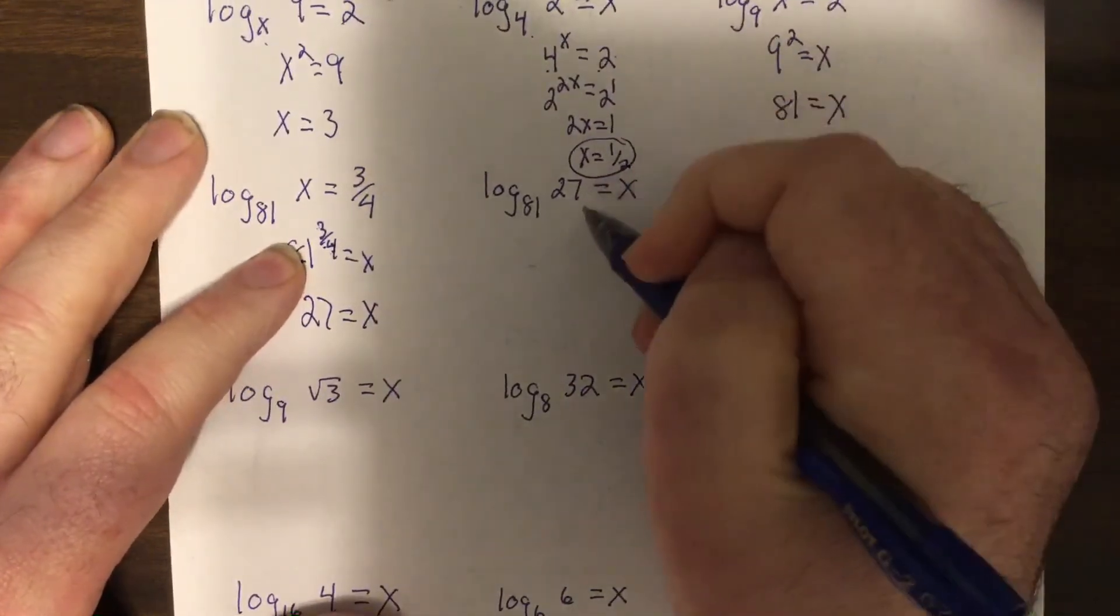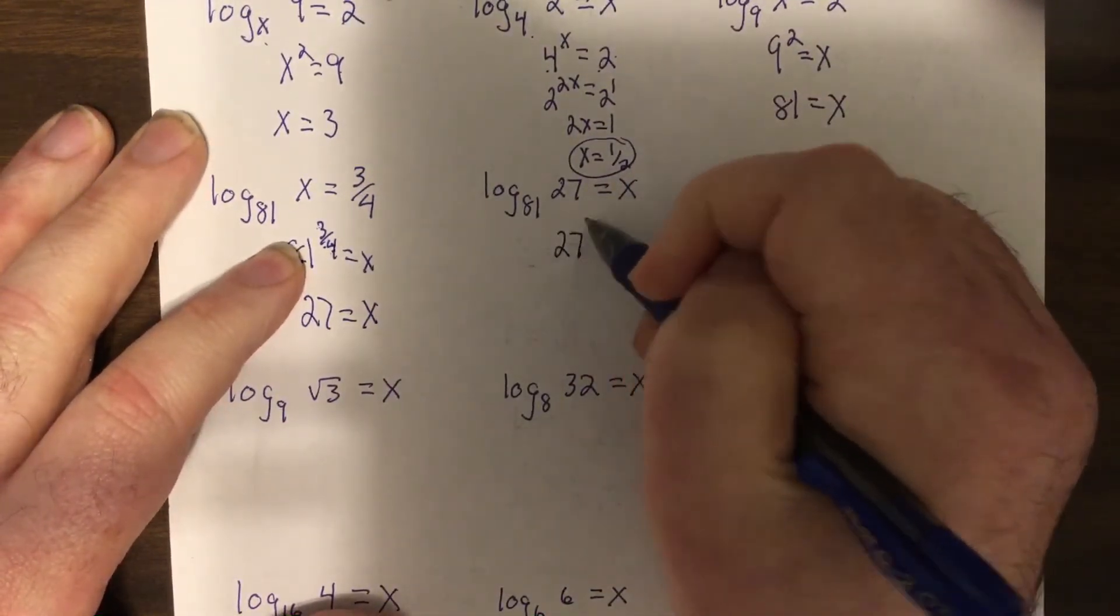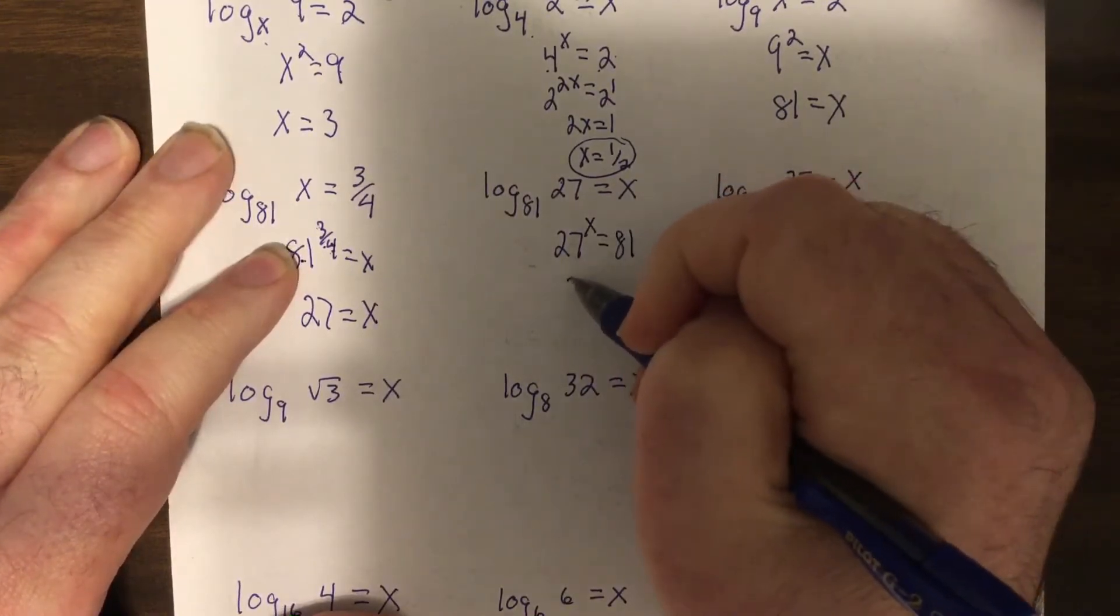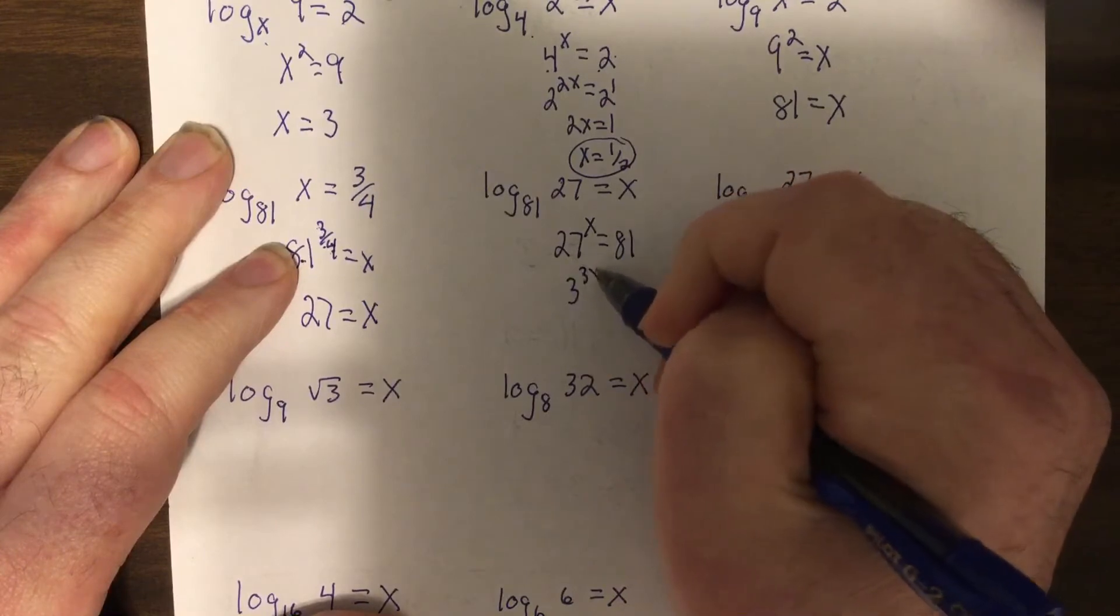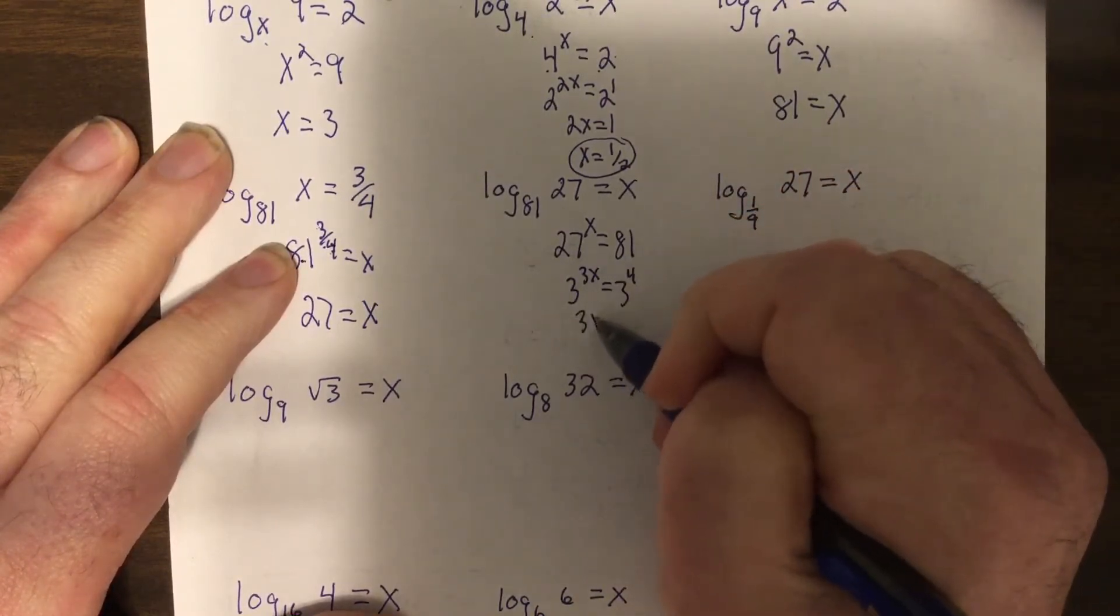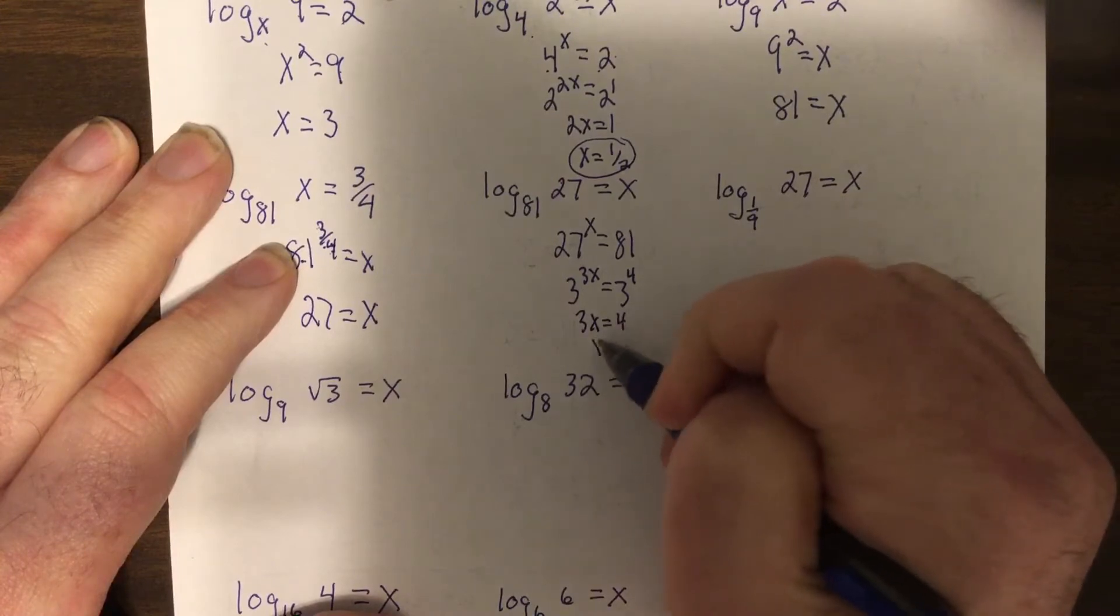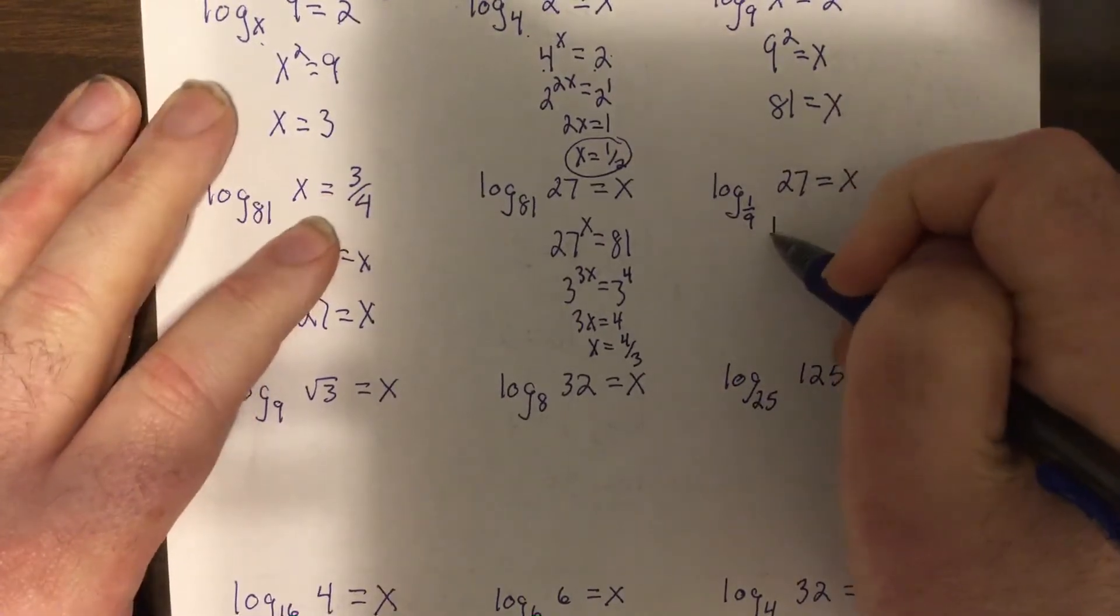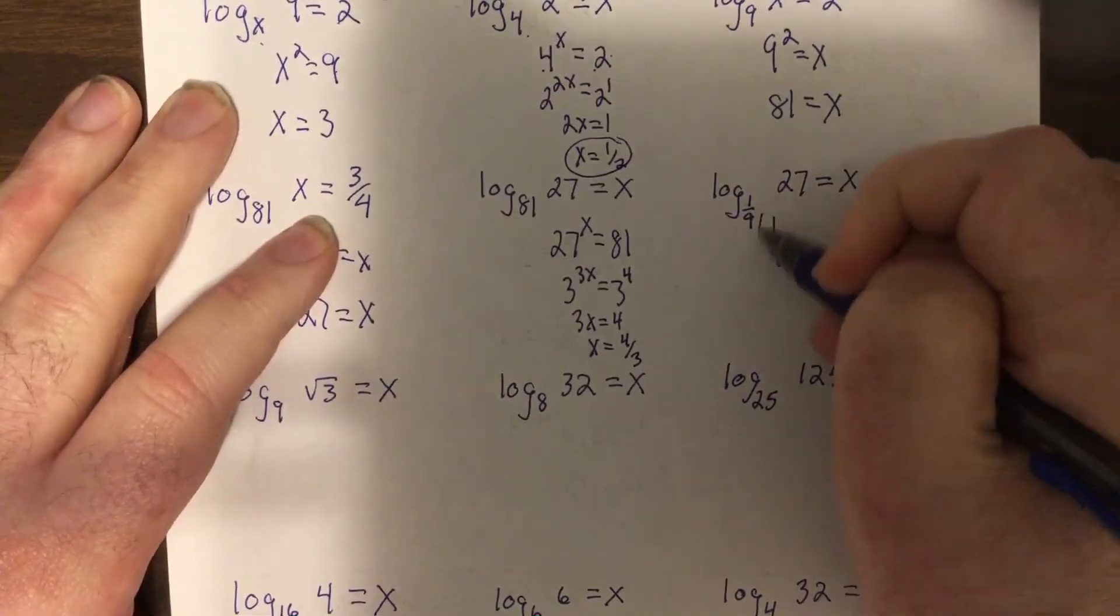Okay, this one: 27 to the x equals 81, so it'd be three to the three x equals three to the fourth, so three x equals four, so x equals four thirds. So this one, one ninth to the x equals 27.